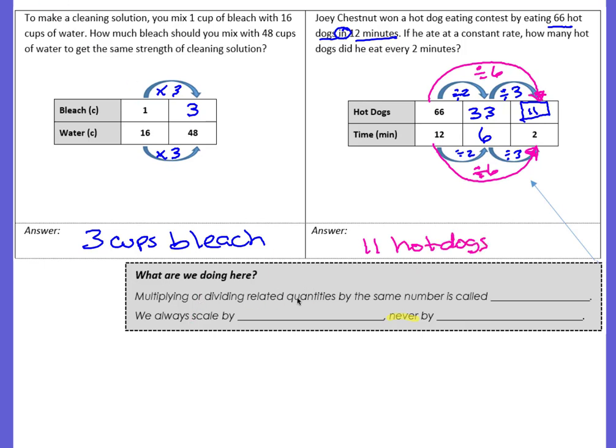So what exactly are we doing here? Multiplying or dividing related quantities by the same number is called scaling. We always scale by multiplying or dividing. Never, never, highlight that, circle that, underline it, never by adding or subtracting. We always multiply or divide. That keeps everything equivalent or proportional.